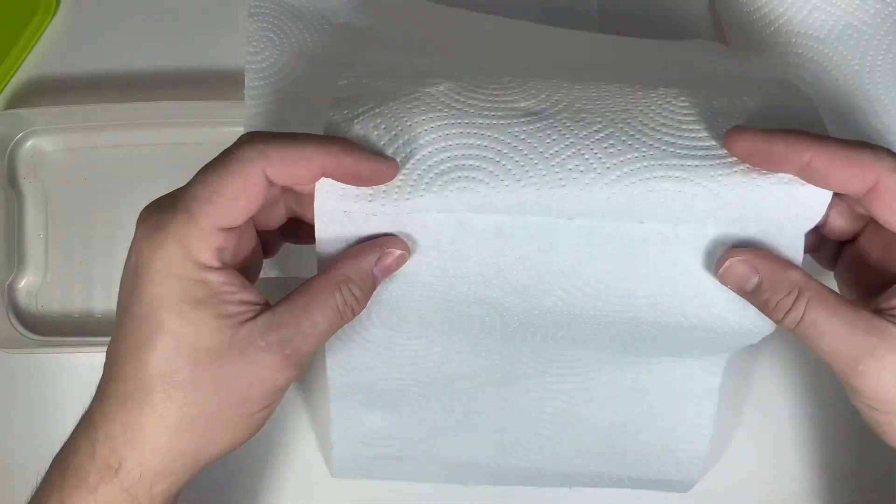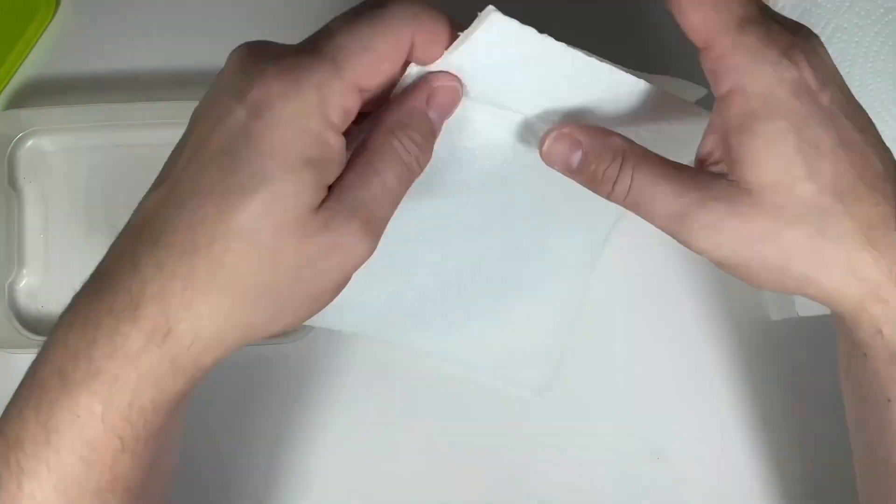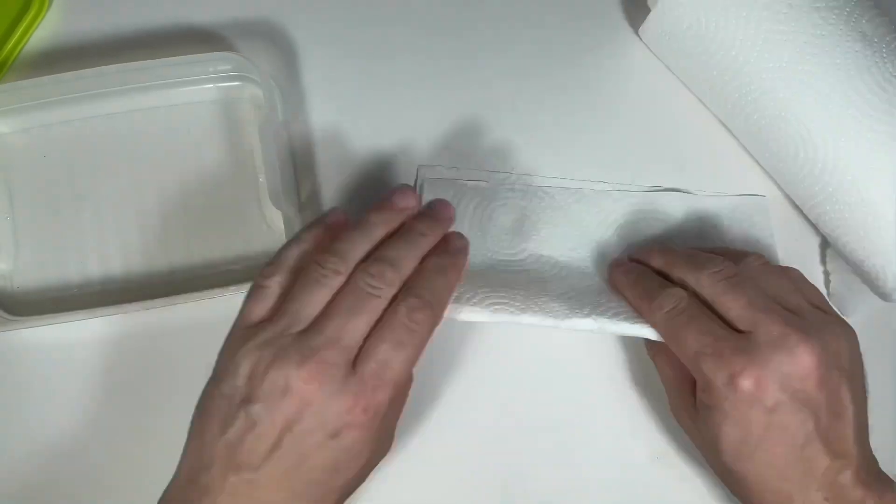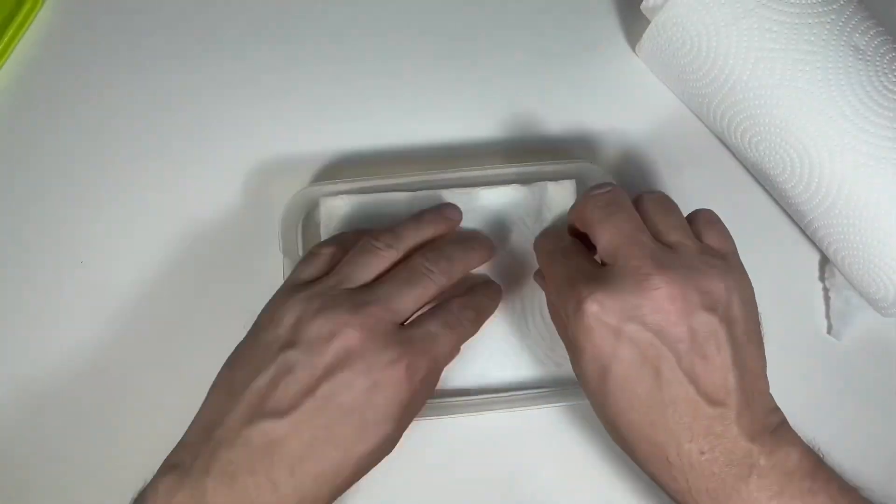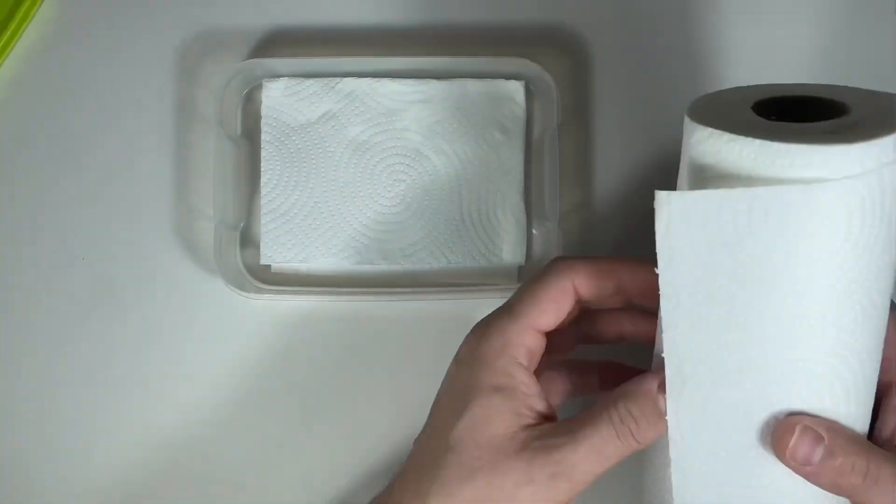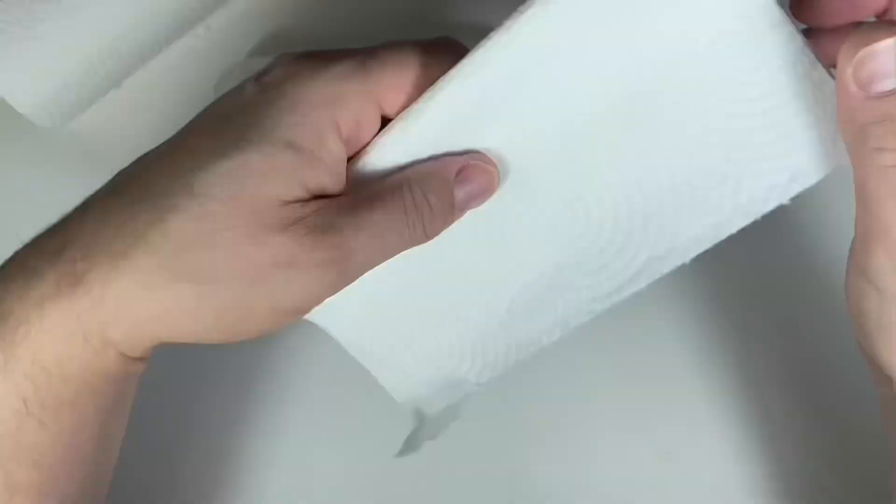Fold the paper towel to fit into the Tupperware. Several layers will be needed to hold plenty of water. I used 9 sheets.